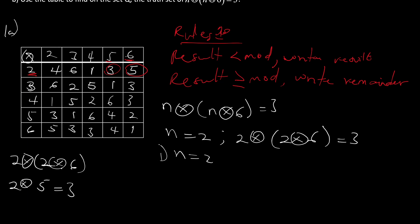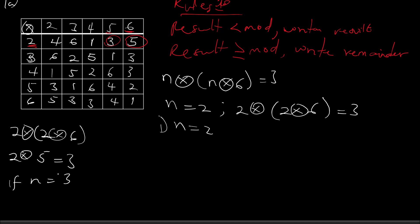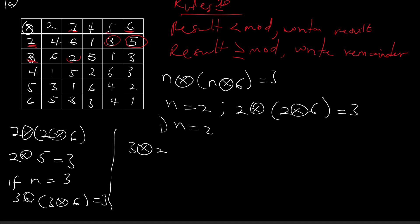Now let's move on to n equals three. If n equals three, we are saying three times (three times six) should equal three. From the table, three times six is two, so we have three times two. Three times two is six, which is not equal to three, so n equals three is out.